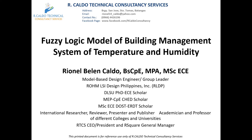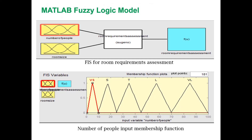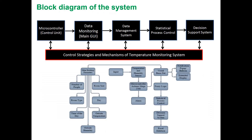Hi, I'm Ryanel, and today I'll be presenting the Fuzzy Logic Model of Building Management System of Temperature and Humidity. The main focus of this study is to assess room requirements and monitor the perceived room environment of a room or laboratory that will notify in-charge personnel about the status using Fuzzy Logic and Statistical Process Control. Air conditioning systems are one of the important considerations of almost every establishment, as they greatly contribute to total energy consumption.